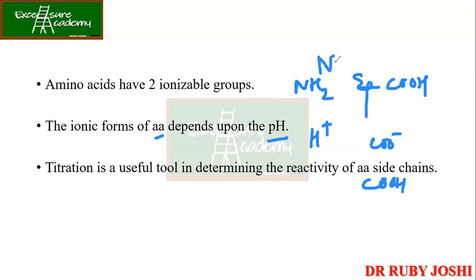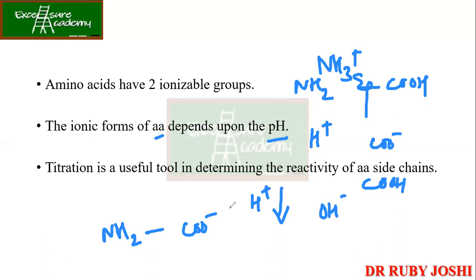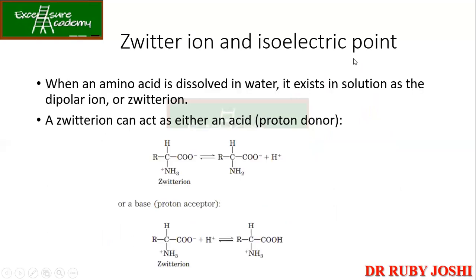And NH2 will become NH3 plus. In the other case, at high pH, H plus is less and OH minus is more. Titration is a useful tool in determining the reactivity of amino acid side chains. When an amino acid is dissolved in water it exists in solution as a dipolar ion or zwitterion, because it has the two ionic forms NH3 plus and COO minus.